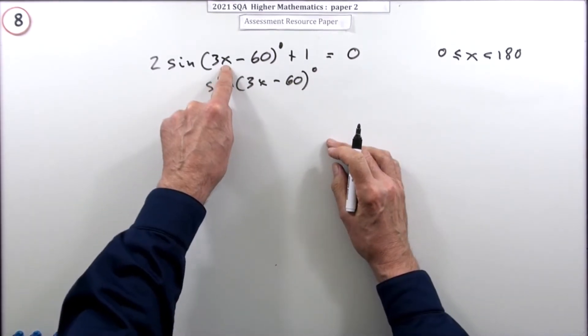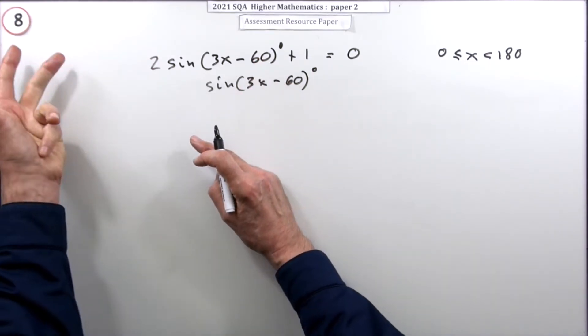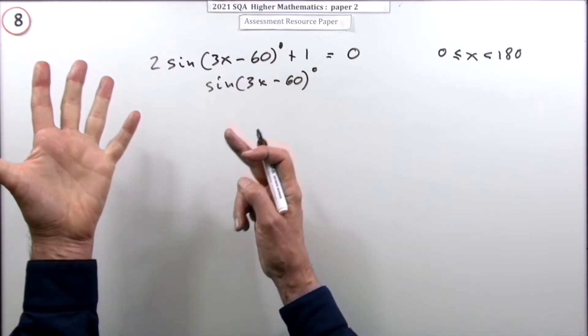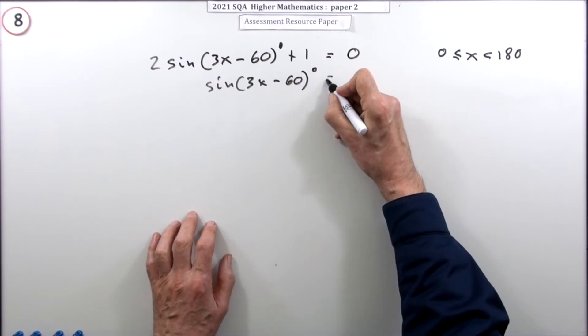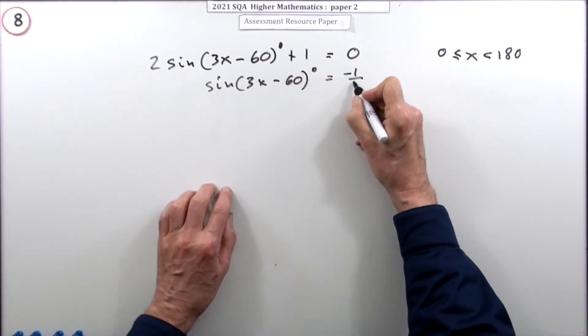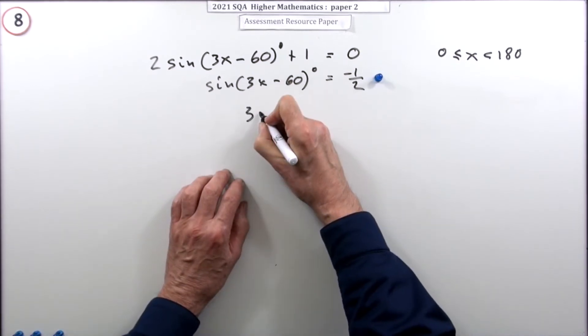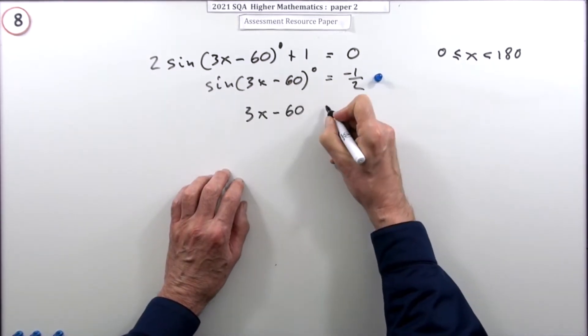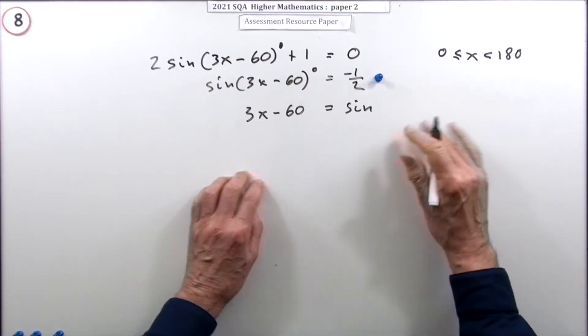In order to get x you had to do times three, take away 60, find the sine, multiply by two, and add one. So to go back you'll have to undo it in reverse order: take away the one, divide by the two. That's the first mark. Now I'll get rid of that sine. 3x minus 60 - I'll get rid of that degree sign at the same time because when I put this down I'm just going to put the value of it.